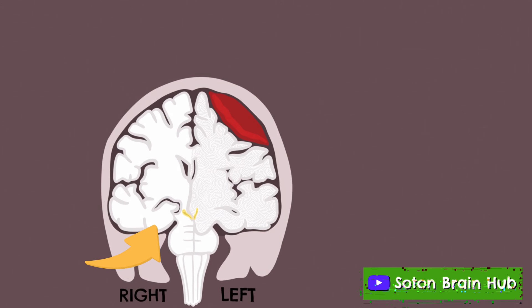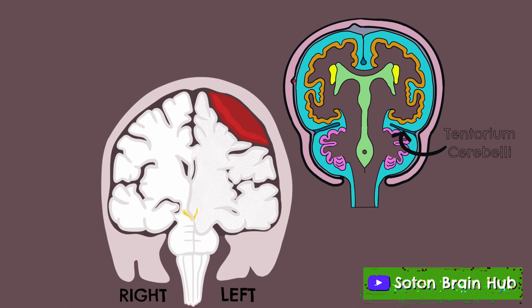Here, the uncus, a structure located at the frontal end of the parahippocampal gyrus in the temporal lobe shifts downwards across the tentorium cerebelli which is the fold of the dura mater that separates the cerebellum from the upper part of the occipital lobes.